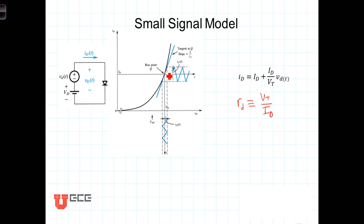The slope of this line is 1 over this resistance value, the small signal resistance.